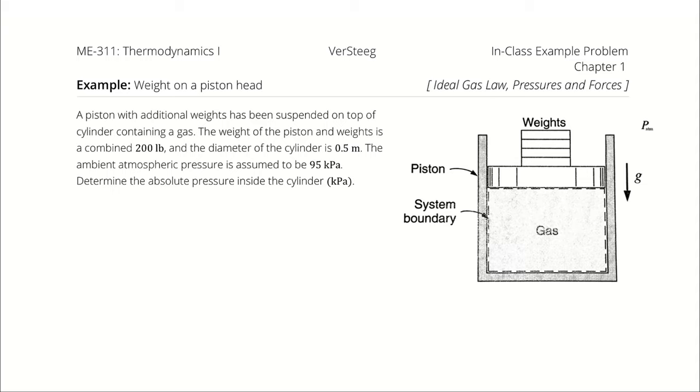A piston with additional weights has been suspended on top of a cylinder containing a gas. The weight of the piston and weights is a combined 200 lbs and the diameter of the cylinder is half a meter.